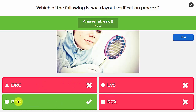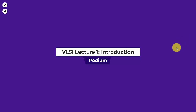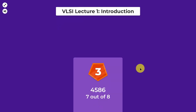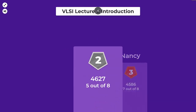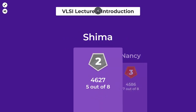PDK — process design kit — is not a layout verification process. It's the package of transistor model files, design rules, and other data provided by the foundry so designers can design their circuits. That was it for this Kahoot — we'll be back next time with our next Kahoot. Bye for now.